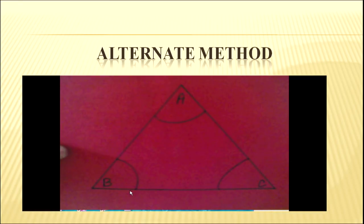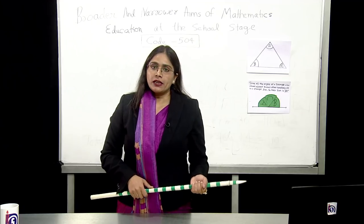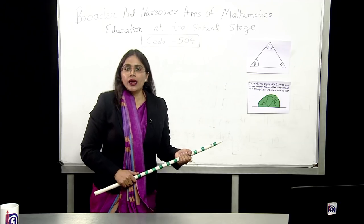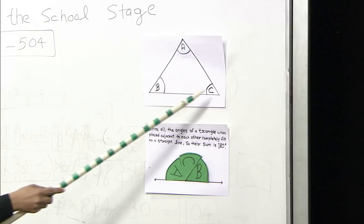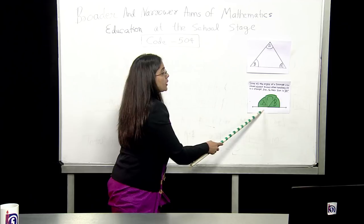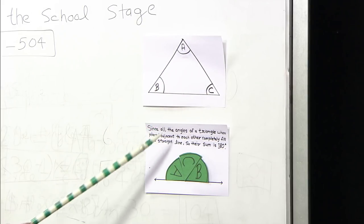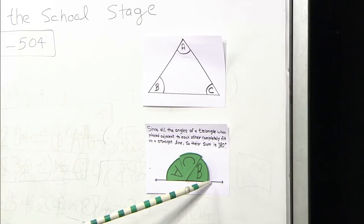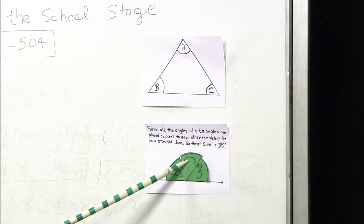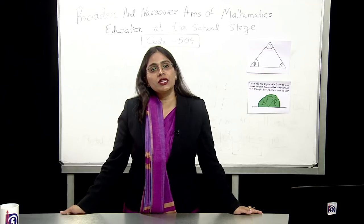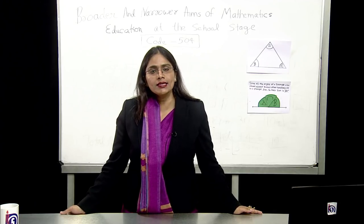So, we have alternate method also to prove the theorem. In this method, again, we have a triangle ABC. Now, cut each angle of a triangle, angle A, angle B and angle C and placed in a way so that they makes a line. Here, I cut angle A, angle B and angle C and I put it on a line, put in a way to form a line. Angle A, angle B and angle C. So, since all angle of triangle when placed adjacent to each other completely, fit on a straight line, so their sum is 180 degree. So, by two way, I have proved the theorem, sum of angles of a triangle is 180 degree.